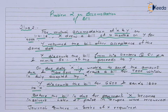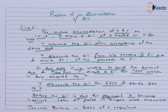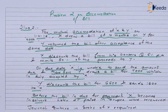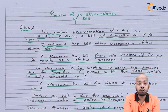Before the due date of the next bill, X becomes insolvent and it was found out that only 25 paise in a rupee — that means only one-fourth of the amount — could be recovered from him. So we have to pass the journal entries for X.